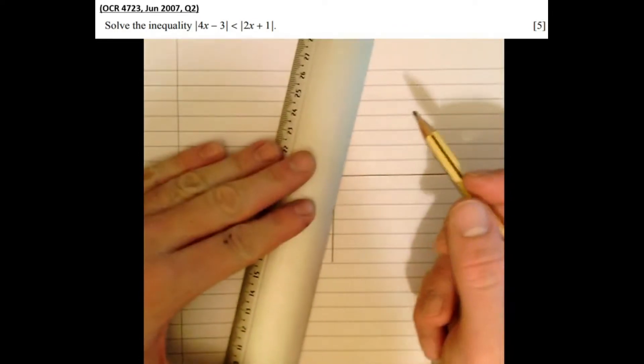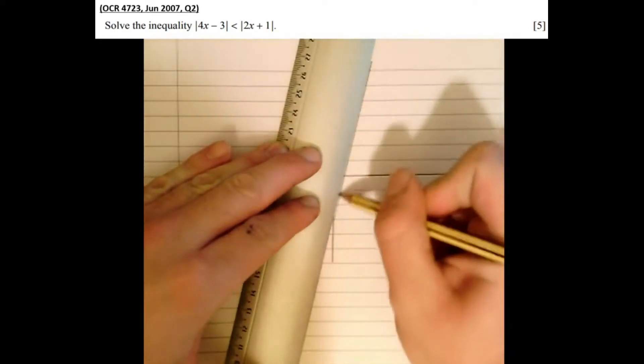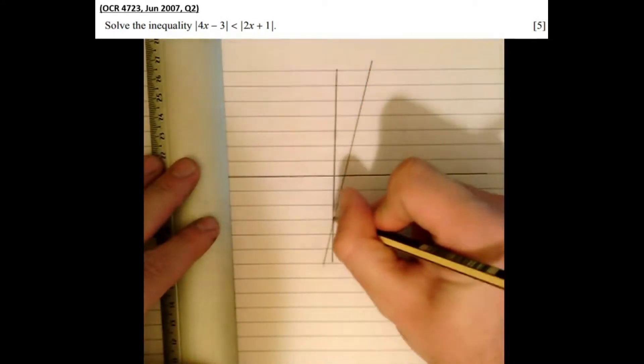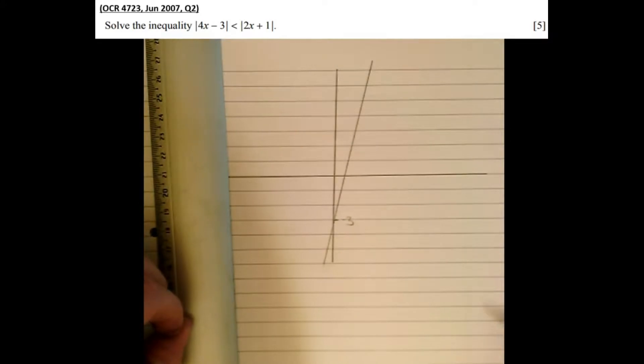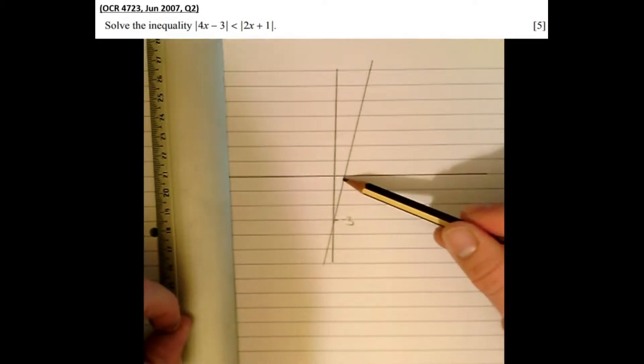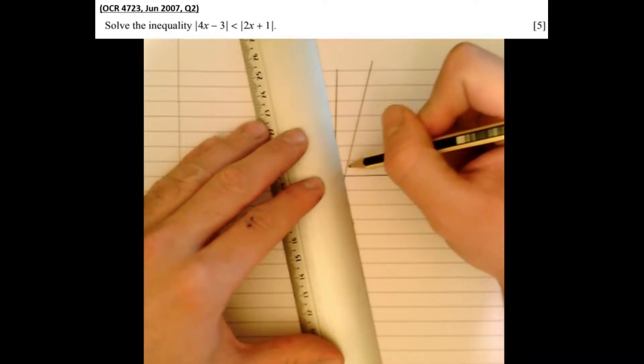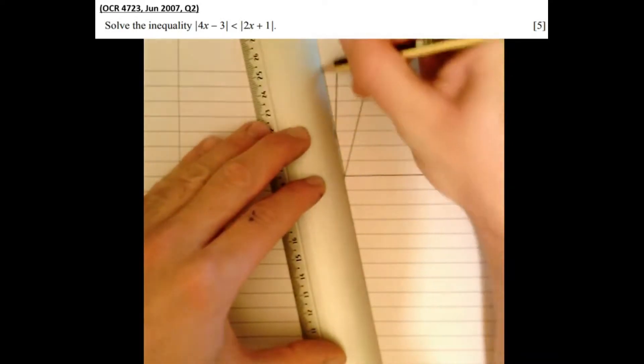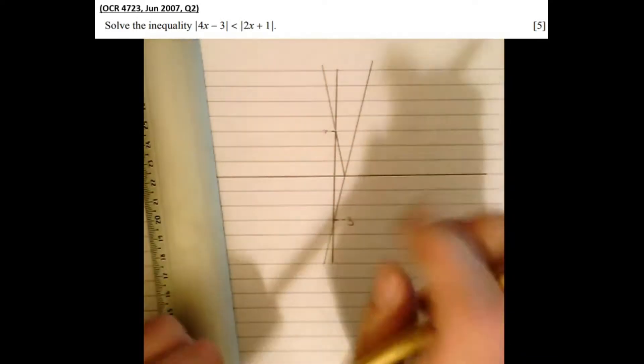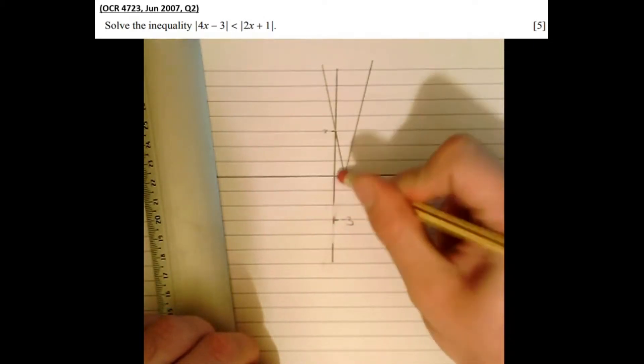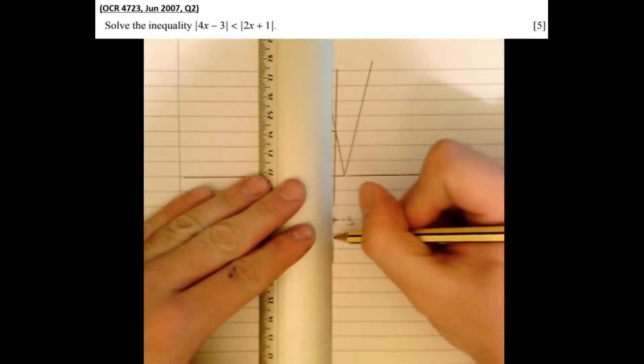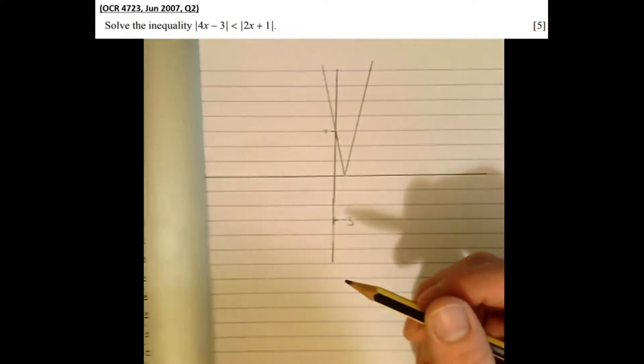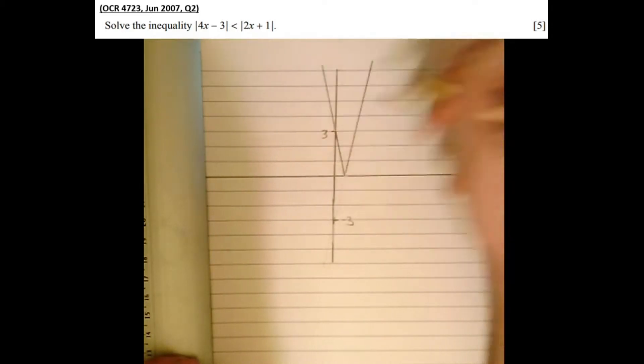Let's start with 4x minus 3. So quite a steep graph crossing at minus 3, but then if we modulus it we flip or reflect any part of the graph that's below the x-axis through the x-axis. So instead of crossing at minus 3, now it's going to cross at 3. And I'd recommend drawing the original graph lightly in pencil then rubbing it out. This is the graph of y equals modulus of 4x minus 3.